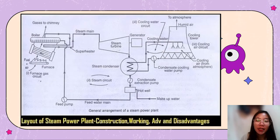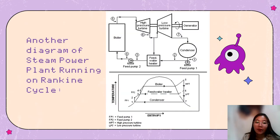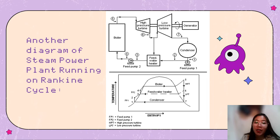This is the schematic process of the actual design of the steam power plant. This is the analog diagram of the steam power plant running on the Rankine cycle, which is used to produce steam within a boiler, and then converting the water into steam, which expands through a turbine, producing useful work.